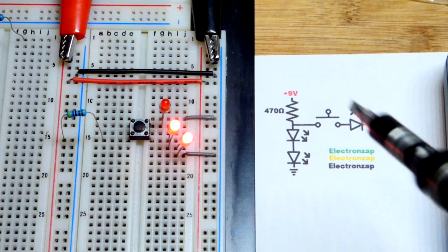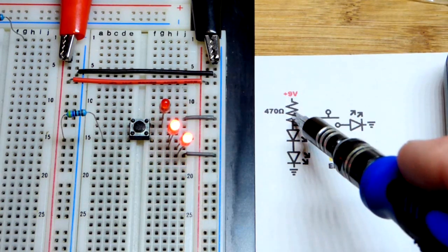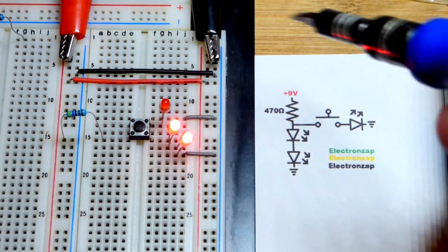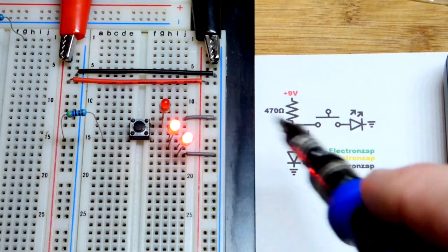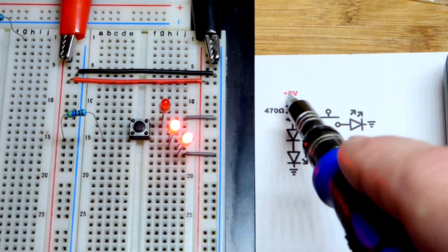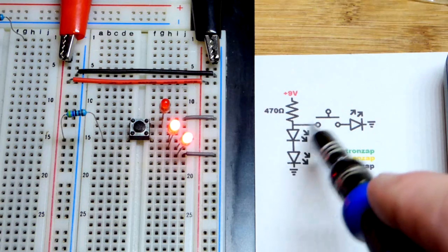But in any case right now we have this situation here. We got current flowing through. Again I'm bumping the power supply. That's why the LED flickered. So current is going to just flow through those two LEDs.